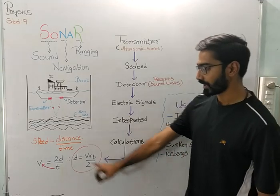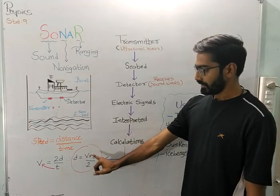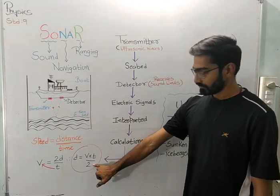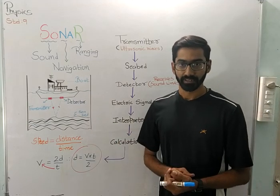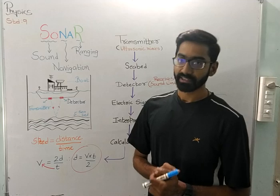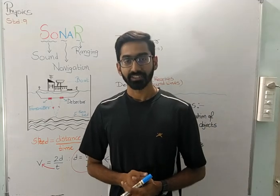Now doing the cross multiplication, you get the formula D equals V into T by 2. What is D? D is the depth of the water body. So likewise, SONAR method is helpful. That is all for today. Thank you.